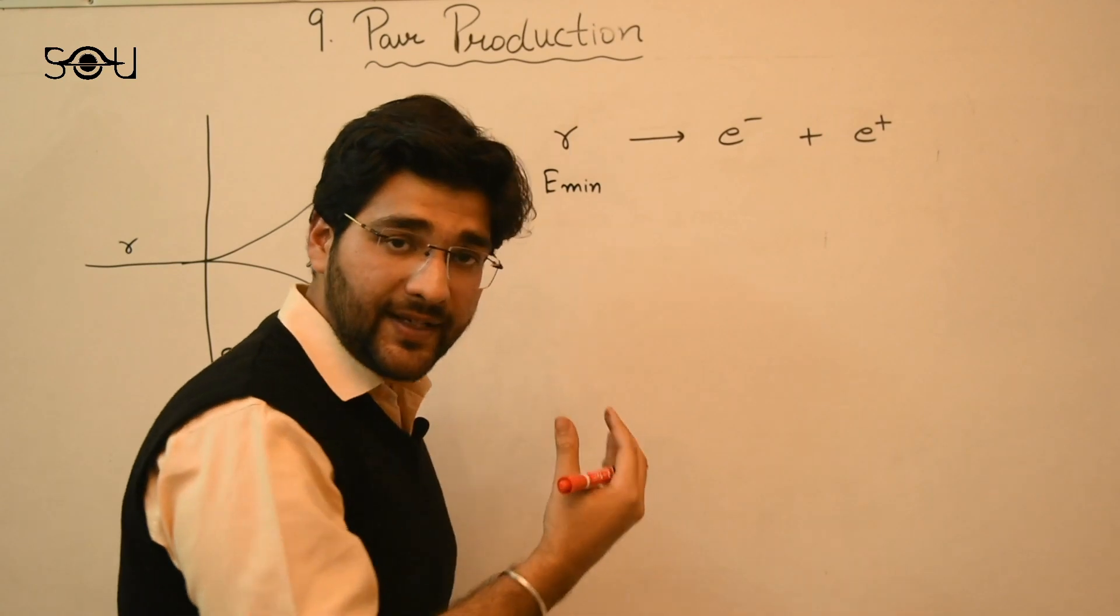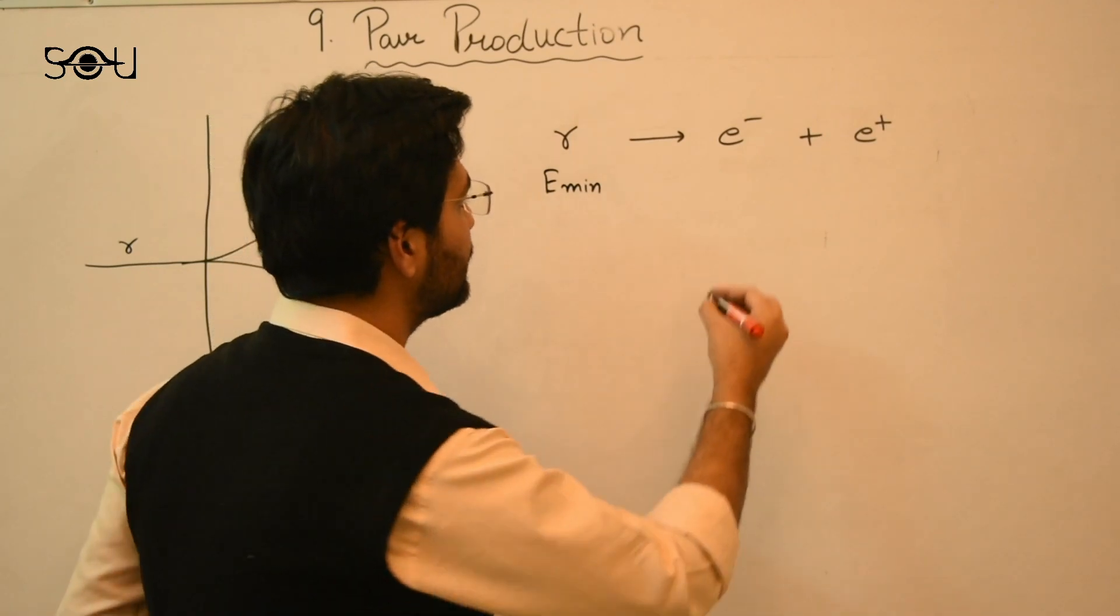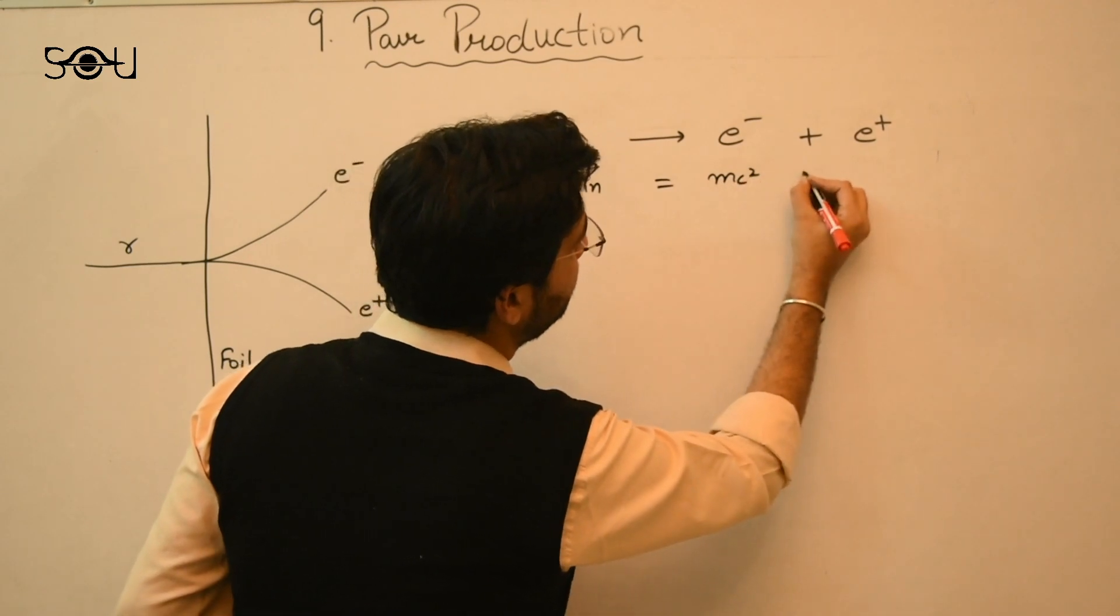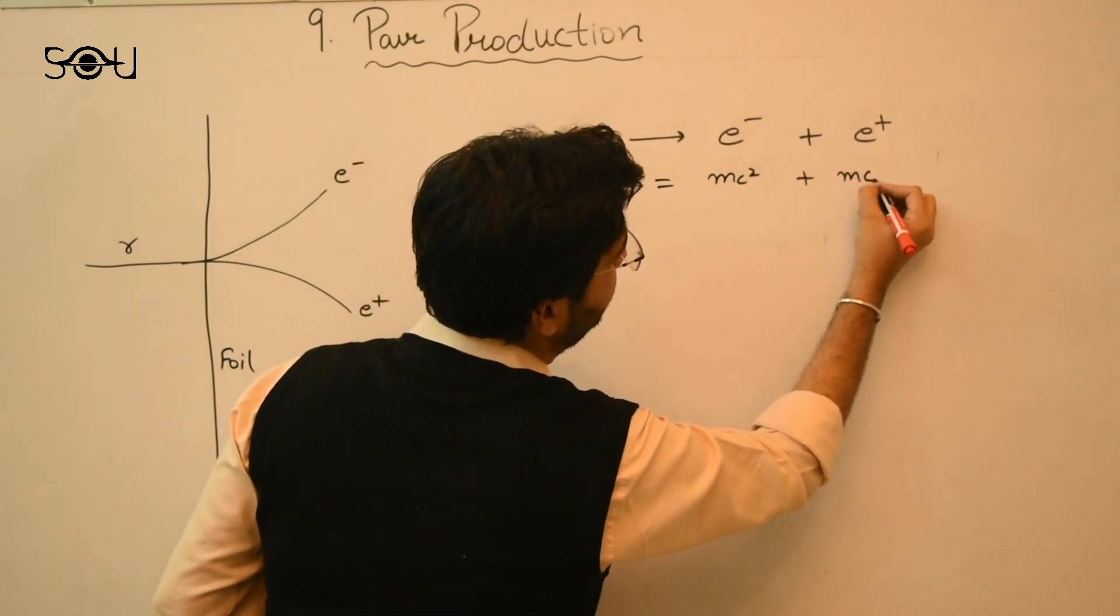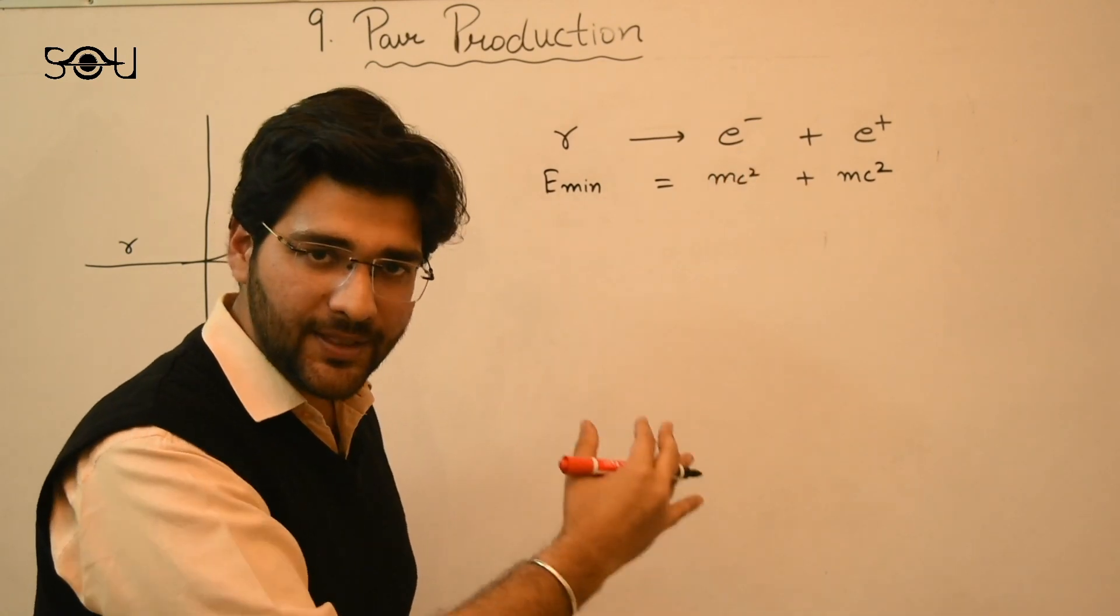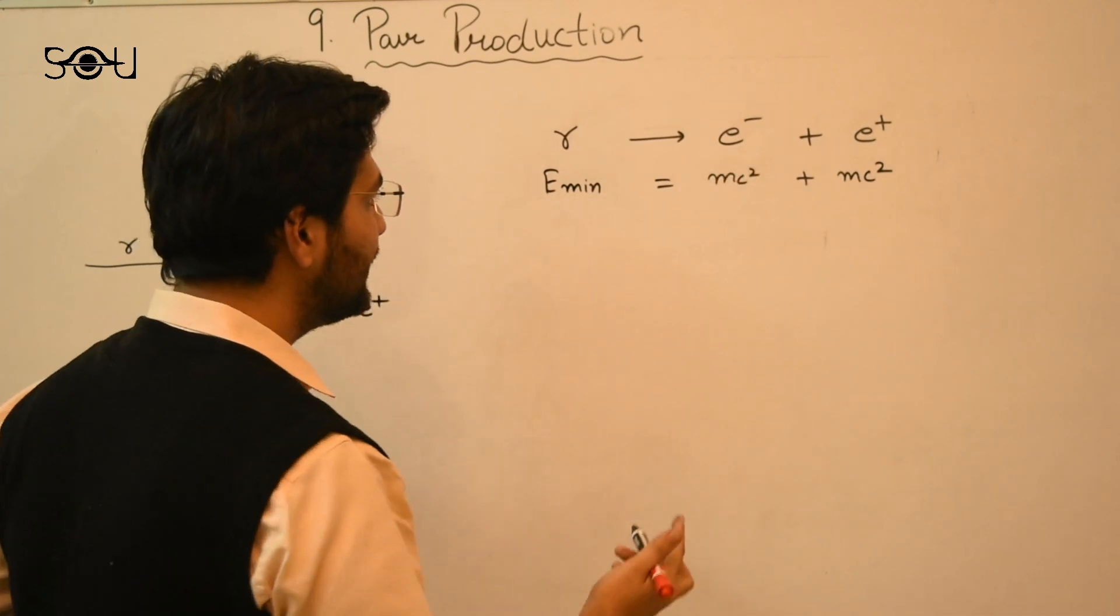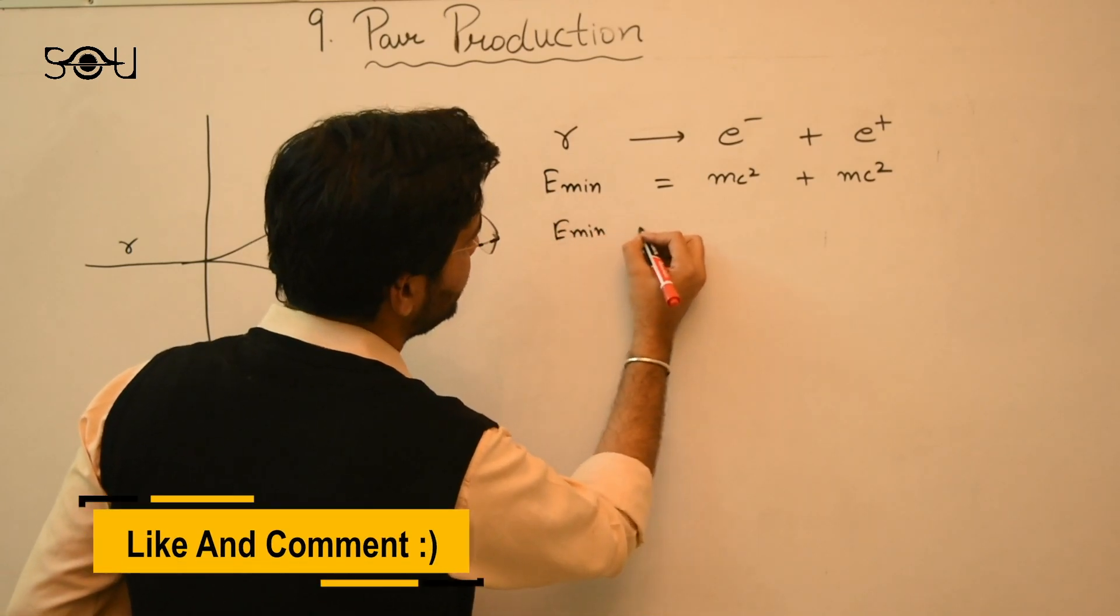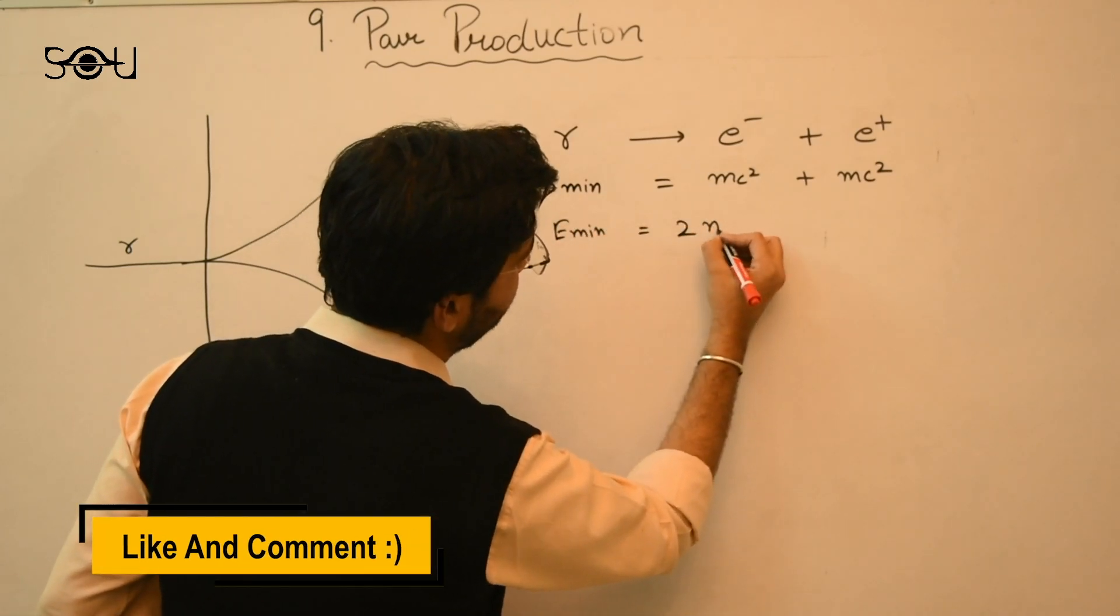So E minimum equal to mc square plus mc square, where m is the mass of the electron. Electron and the positron have the same mass. So this becomes E minimum is equal to 2 mc square.